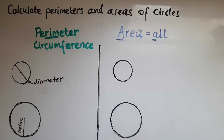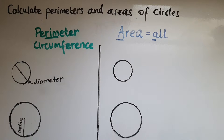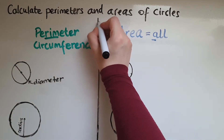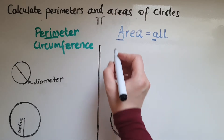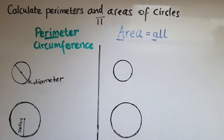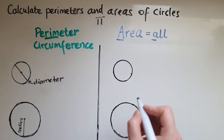We're going to see how to get the formula for the circumference and the area, and there is a symbol we use in both cases. This is pi — this symbol here.